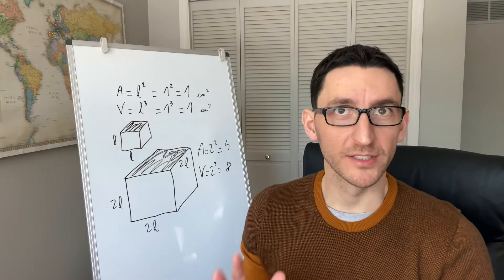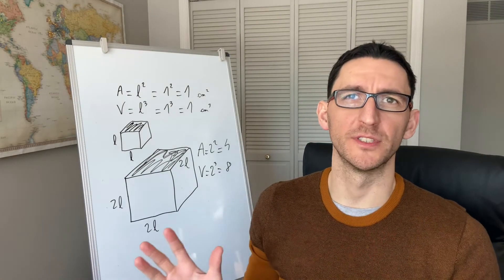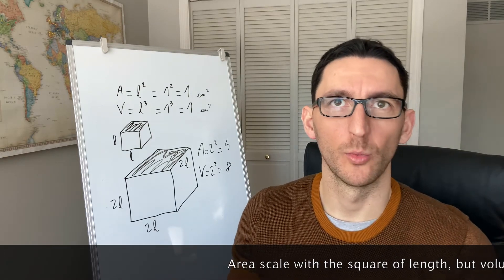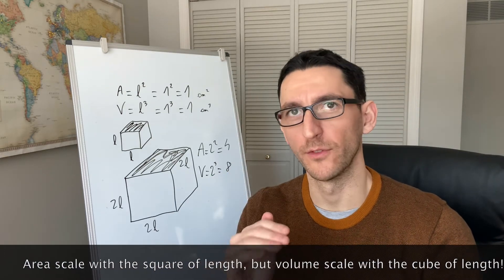Now, Galileo discovered this principle more than 400 years ago, that areas scale with the square of the length, but volumes scale with the cube of the length.